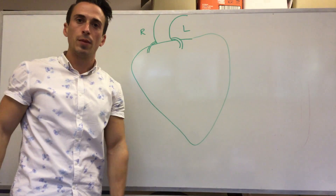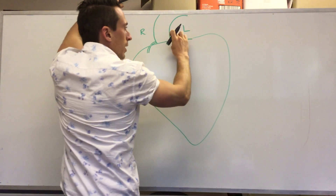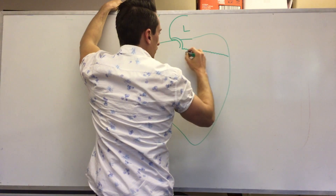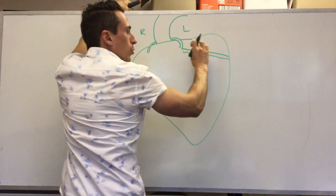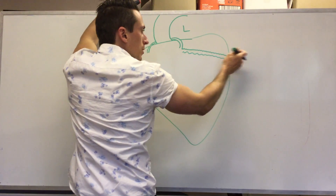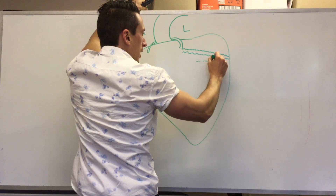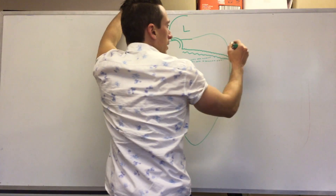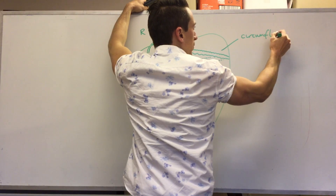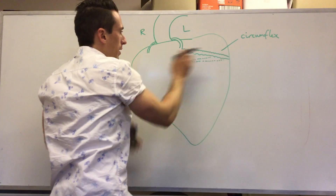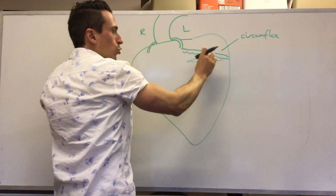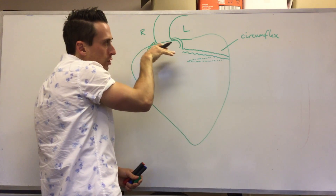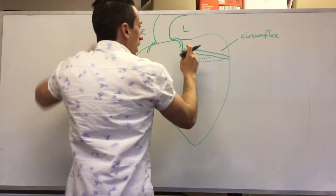Focusing on the left coronary artery, as it comes out from the trunk of the aorta it starts to branch off and wraps its way around the left side of the heart towards the posterior aspect. This artery is called the circumflex. There is a little groove called a sulcus that separates the atria from the ventricles, and the circumflex runs along this atrioventricular sulcus.